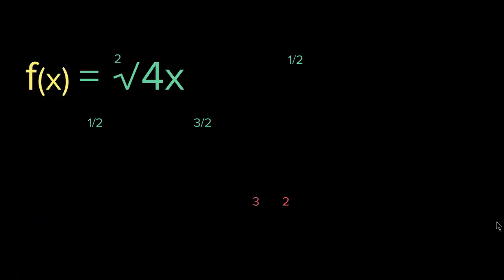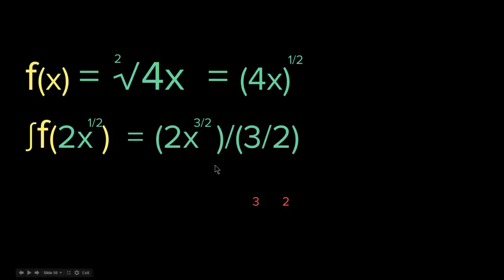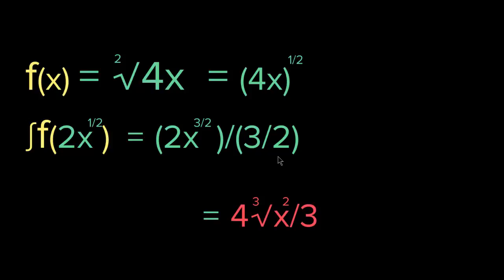Let's look at another example: f of x equals the square root of 4x. How do you find the integral? Turn the square root into a power — it becomes 4x to the power of 1 over 2. Then add 1 to the exponent: 1 over 2 plus 1 equals 3 over 2. So the integral is 4x to the 3 over 2, divided by 3 over 2, which simplifies to 4 times the cube root of x squared, over 3.